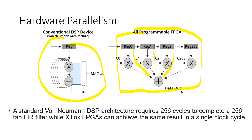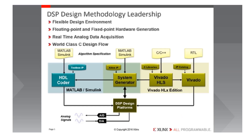This is an example of DSP design methodology with Xilinx. The advantages include a flexible design environment, fixed and floating point hardware generation, and real-time analog data acquisition. The best design flow approach supports different input specifications: MATLAB Simulink uses System Generator and HDL Coder; C and C++ use Vivado High-Level Synthesis; and RTL specifications go directly into Vivado tools.